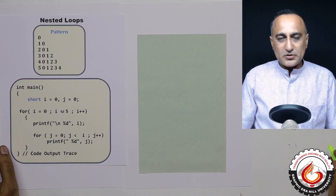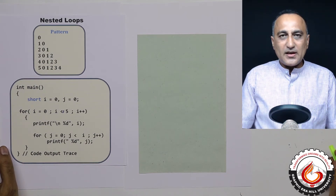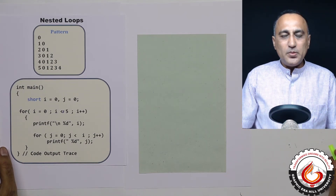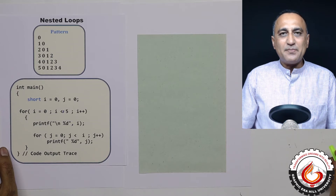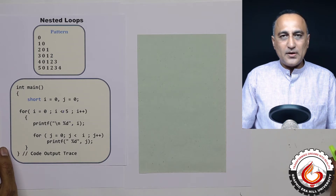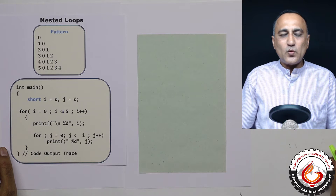Nested loops. If I have a loop within a loop, that is an example of a nested loop. I can have more than one loop within a master loop.